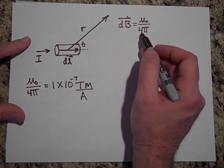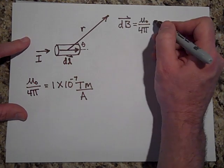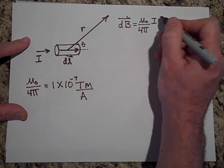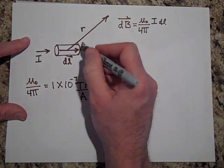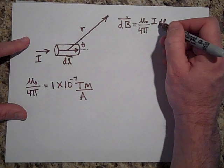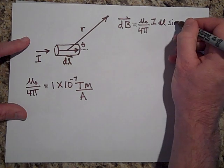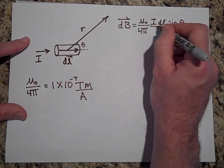Okay, so this is mu naught over 4 pi, and then I times DL, cross R, or we can say IDL sine of theta all over R squared.